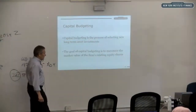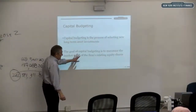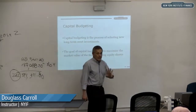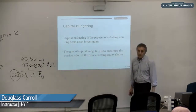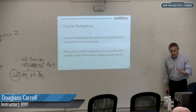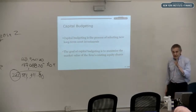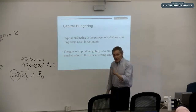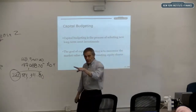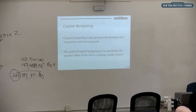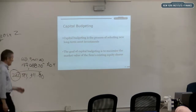Capital budgeting is the process of selecting from among a range of different investment programs, because most businesses don't think of just one thing to invest in. Even in a single product company, they'll think: do I build the factory here or do I build the factory over there? What model do I develop? Many companies consider a range of different things they might invest in.